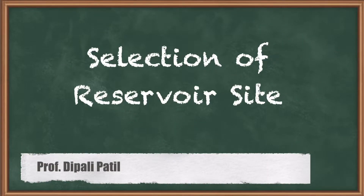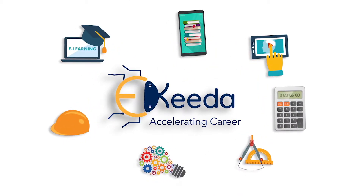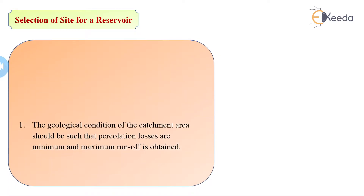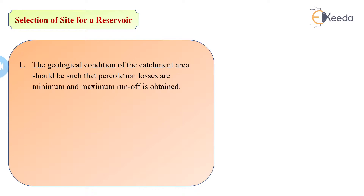Once the survey or investigation had finished, we can summarize and finalize the points required for the selection of a site for the reservoir. The first condition is that the geological condition of the catchment area should be such that percolation losses are minimum and maximum runoff is obtained.